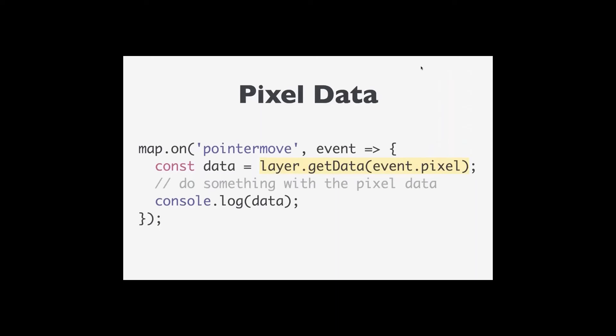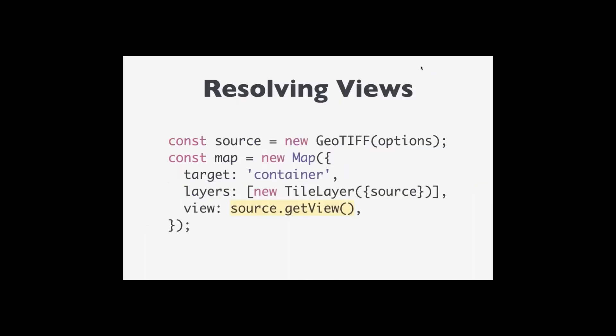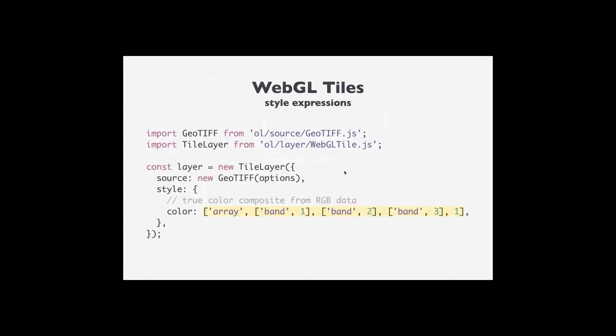Two functions from the previous examples: first, the getData function that lets me display pixel values in the upper left. Second, sources now have a getView method which returns a promise for view-related properties. You can use that as your map's view, so you don't have to read the metadata yourself — just let the source configure the view. Those examples used RGB three-band data or three separate single-band rasters.